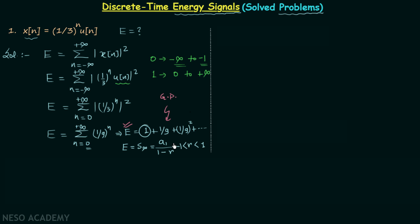The common ratio is equal to 1/9 in this case, which is definitely less than 1 and greater than minus 1, so we can use this formula. The total energy equals A1 divided by 1 minus R. A1 is 1, so we have 1 divided by (1 minus 1/9).